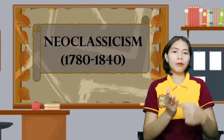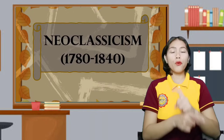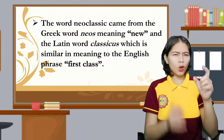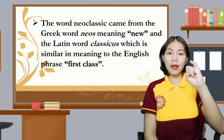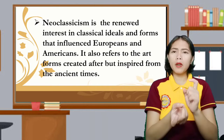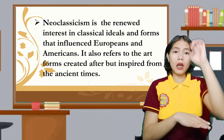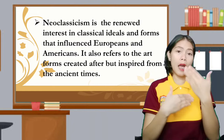Now let's move on and discuss Neoclassicism from 1780 to 1840. The word 'neoclassic' came from the Greek word 'neos' meaning new, and the Latin word 'classicus,' which is similar in meaning to the English phrase 'first class.' Neoclassicism is the renewed interest in classical ideals and forms that influenced Europeans and Americans, and refers to art forms created after but inspired by ancient times.